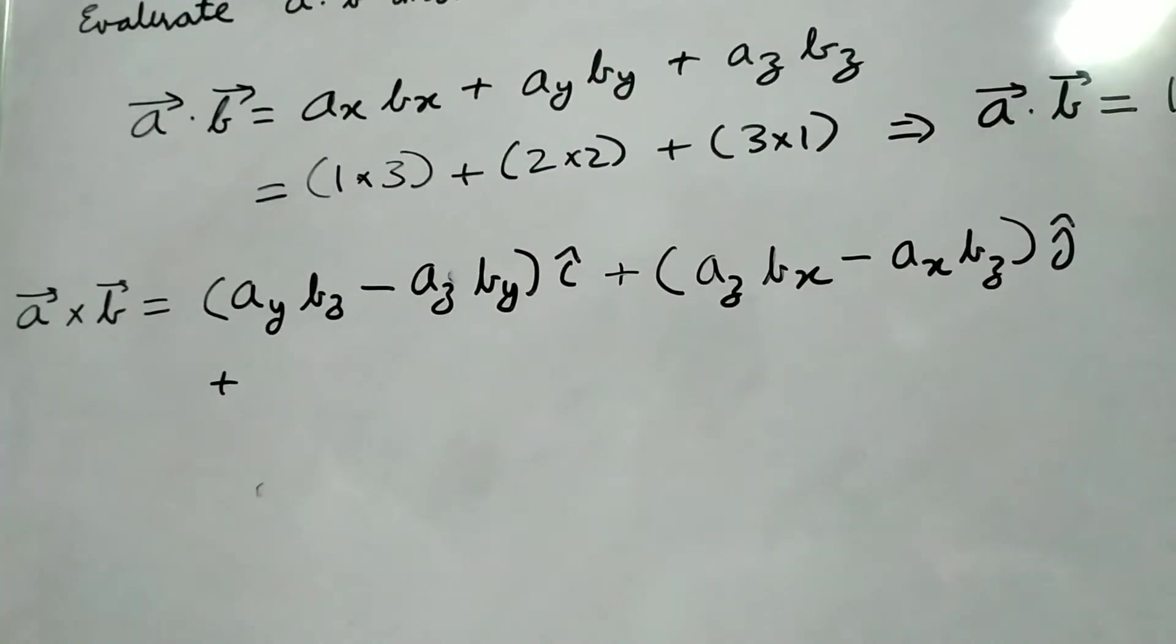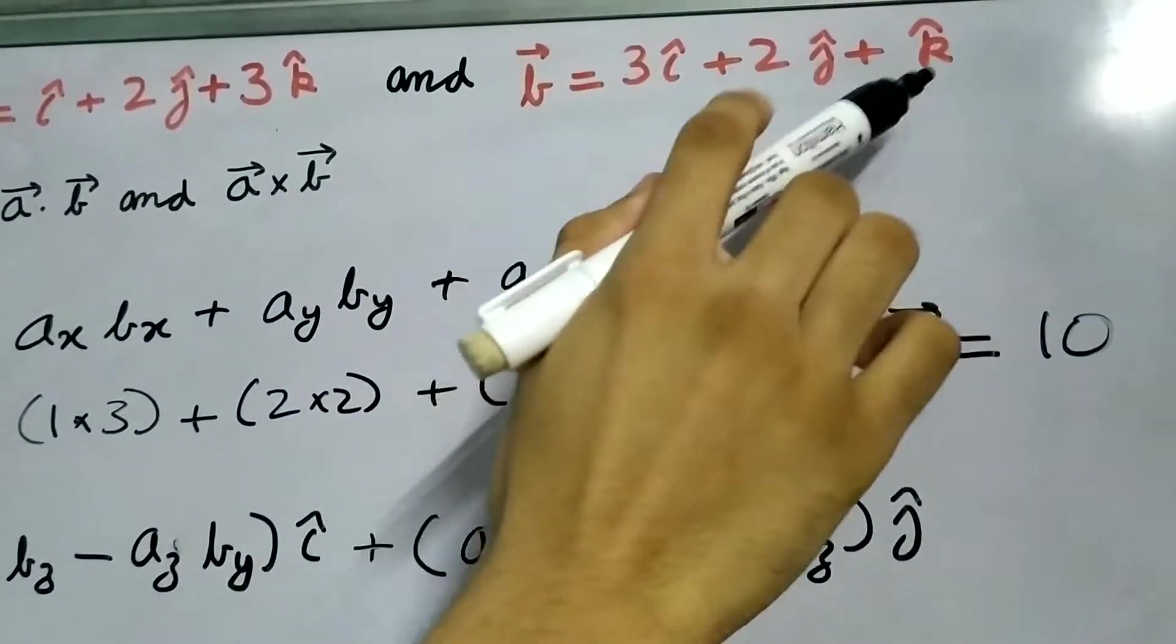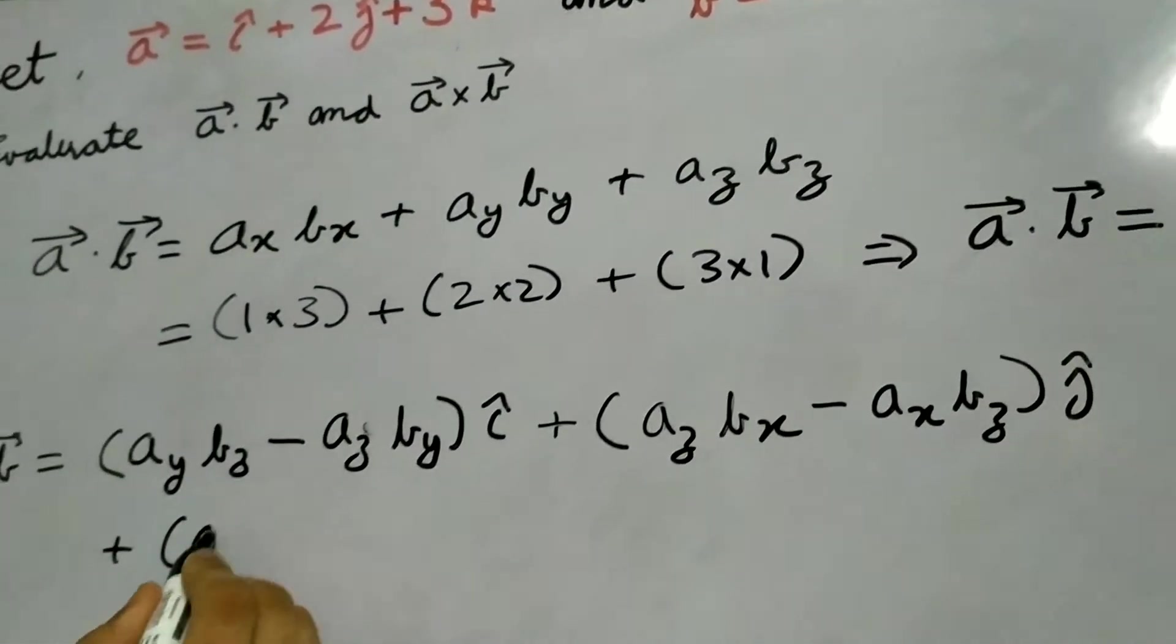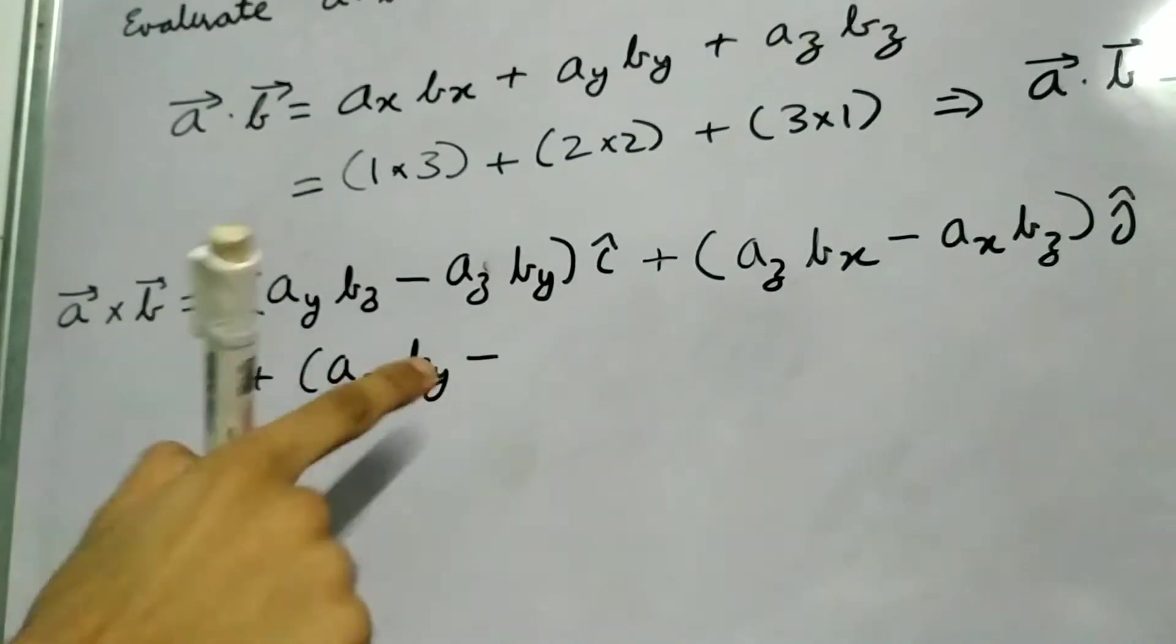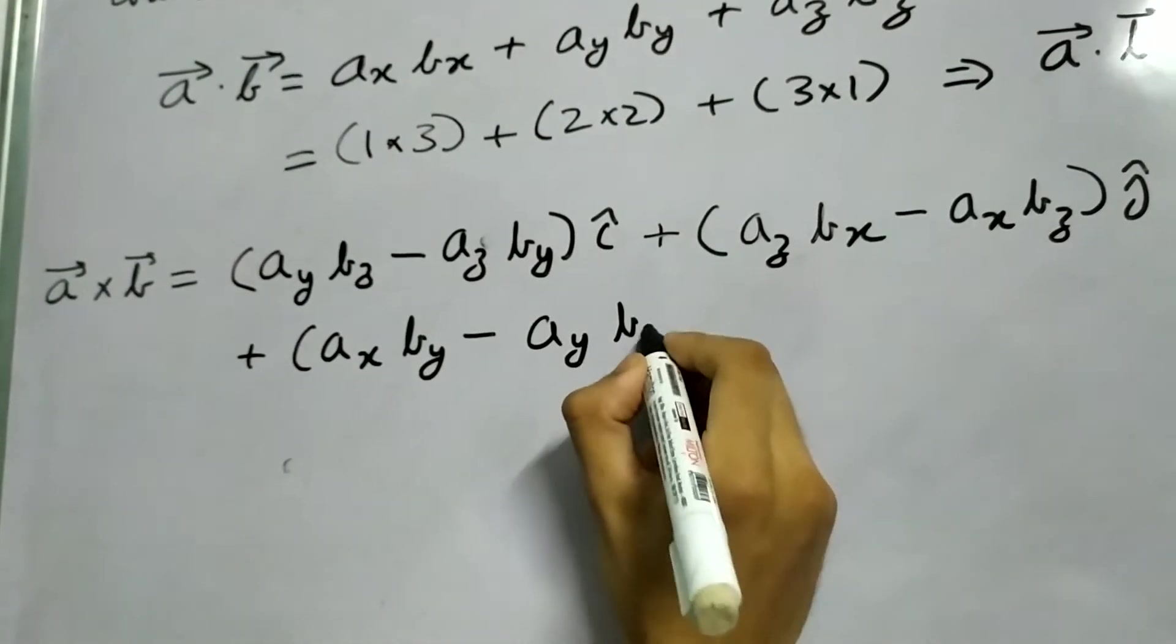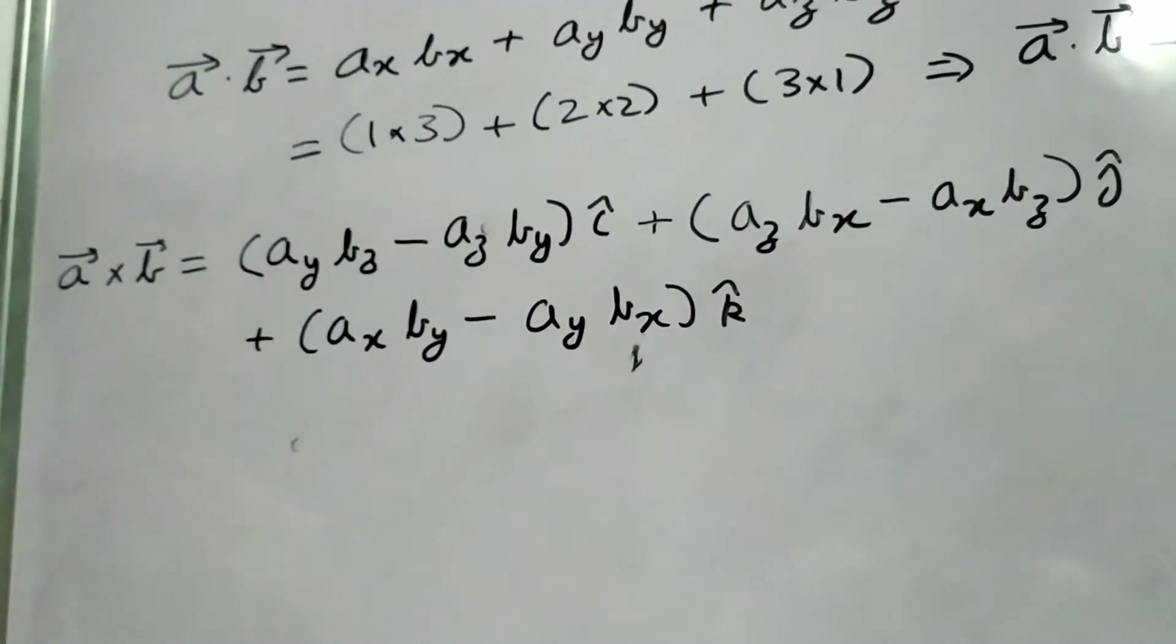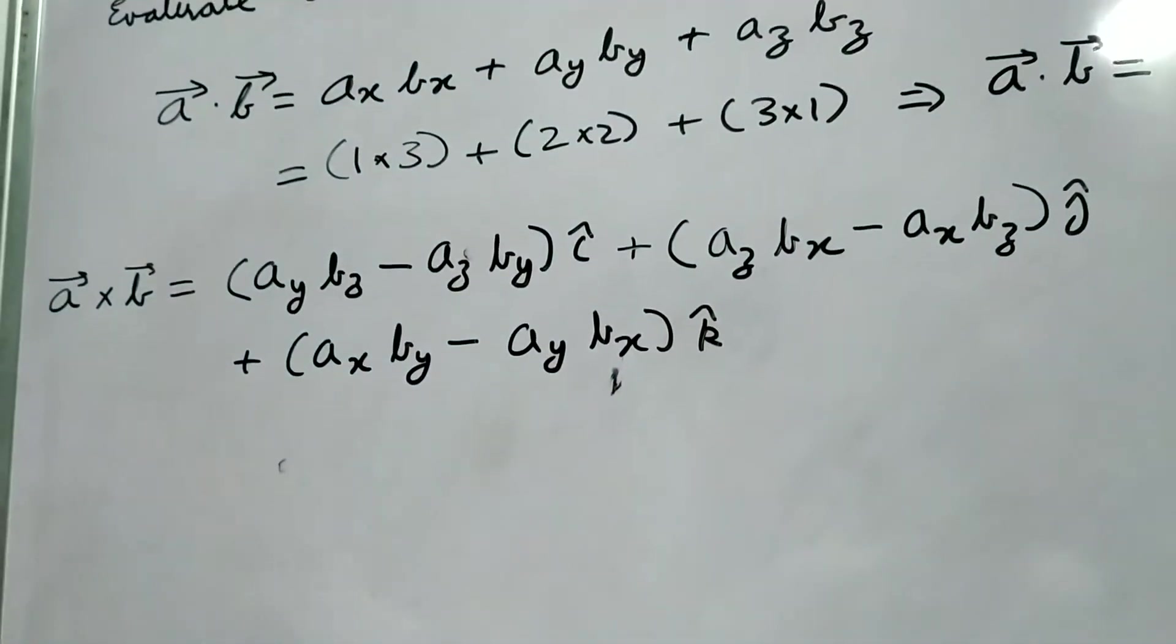Plus, now comes the K component or the Z component. A_x B_y minus A_y B_x times K cap. And now we just need to plug in the values and find out.